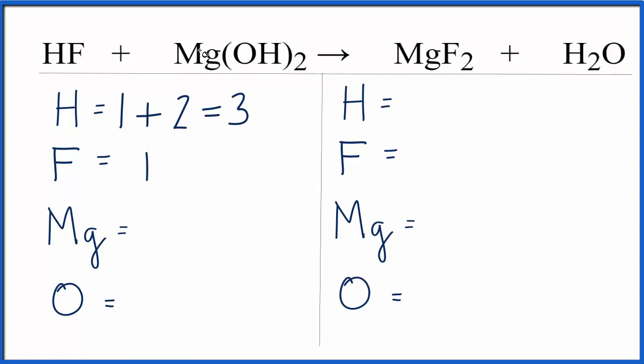Fluorines, we have one, magnesiums, we have one, then again the two that goes to everything, so two times one, that gives us two oxygen atoms.